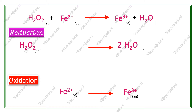The next step is to balance atoms other than the central atoms. In the reduction reaction, on the reactant side we have 2 hydrogens, but on the product side we have 4 hydrogens. So we add 2 more hydrogens on the reactant side. Since this reaction occurs in acidic medium, we add them as 2 H+ ions.